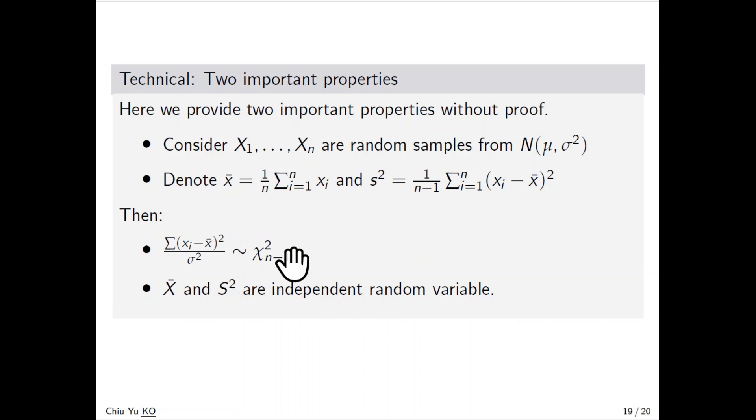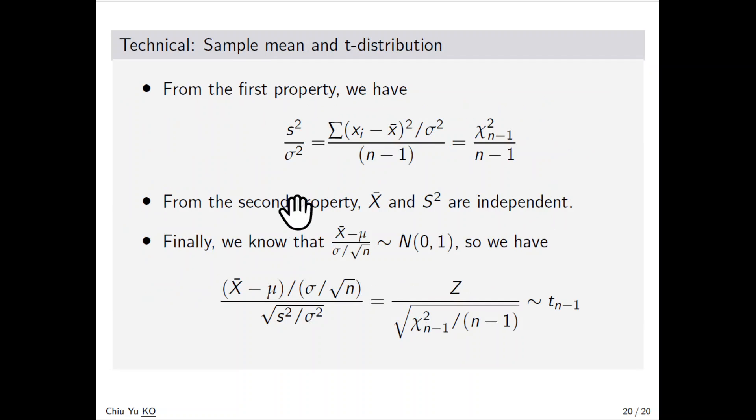From the first property, we have s²/σ² equals χ²ₙ₋₁/(n-1). So s²/σ² is chi-square divided by n-1. From the second property, X̄ and s² are independent.